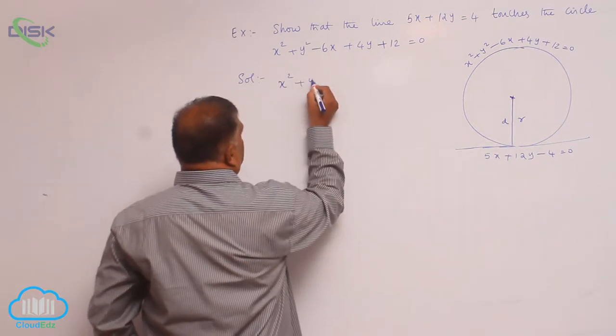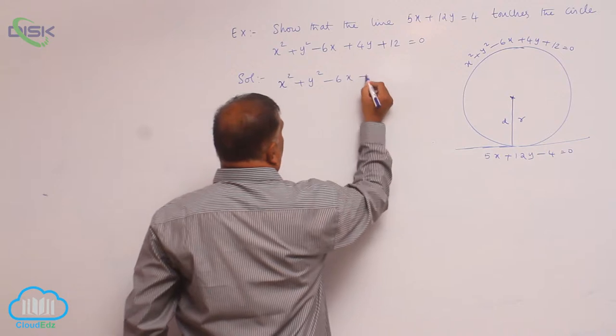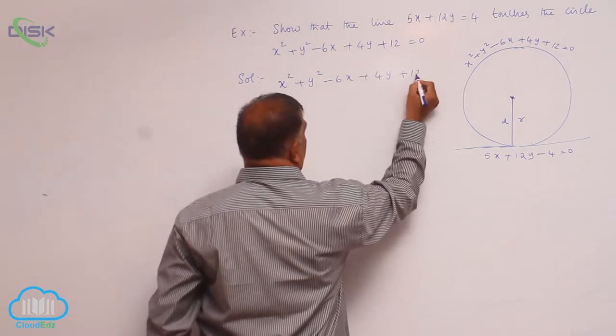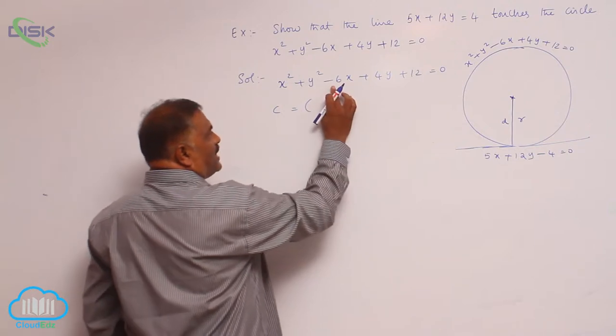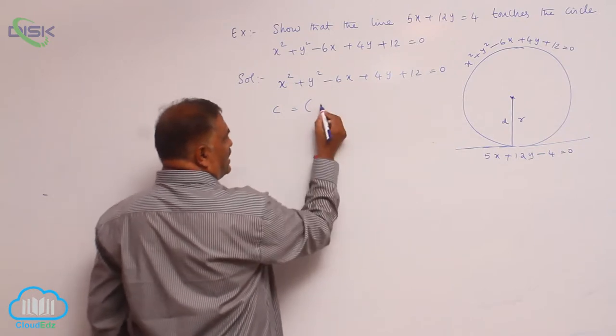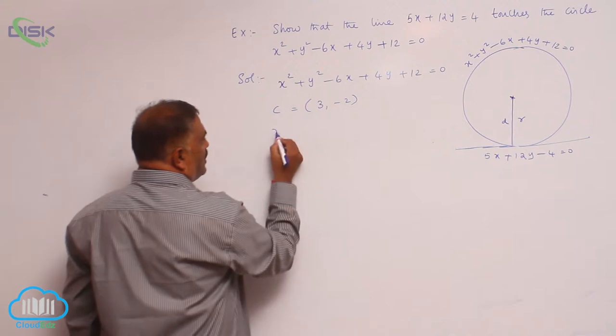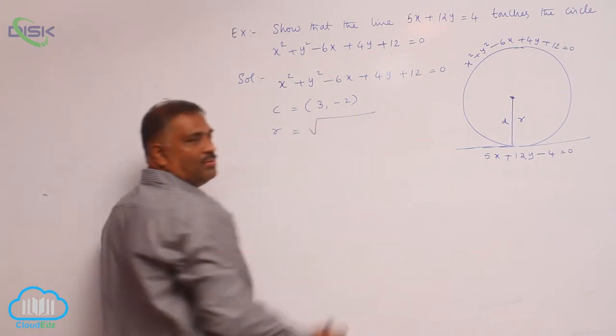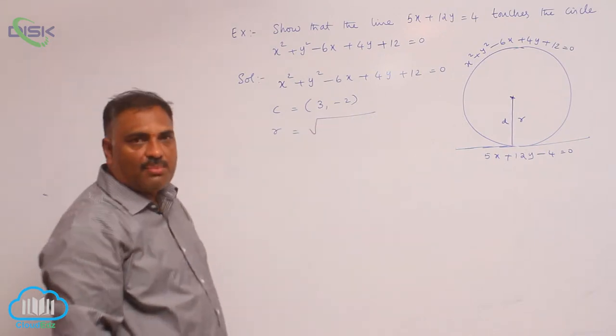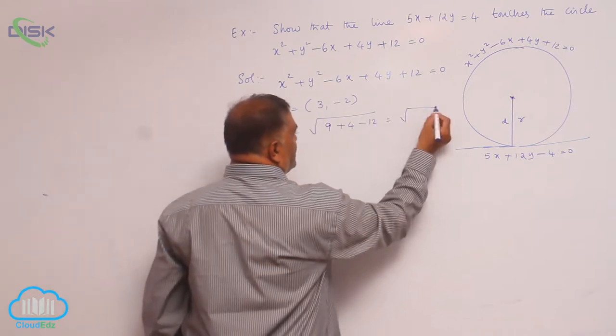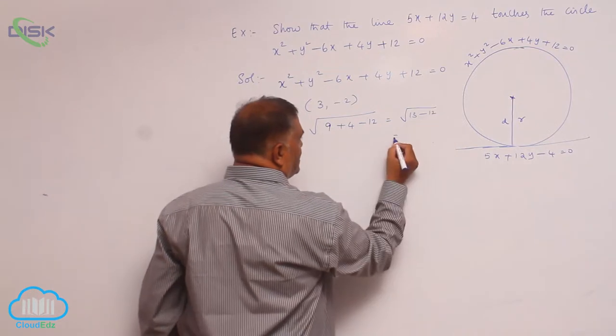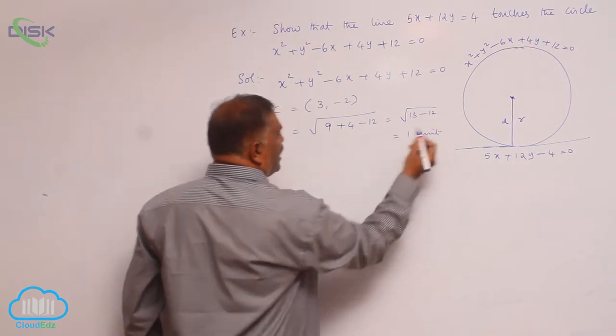First, consider x square plus y square minus 6x plus 4y plus 12 is equal to 0. Center is equal to minus g minus f, that is 3 comma minus 2. Radius is equal to square root of g square plus f square minus c, that is square root of 9 plus 4 minus 12. This is 13 minus 12 is equal to 1 unit.